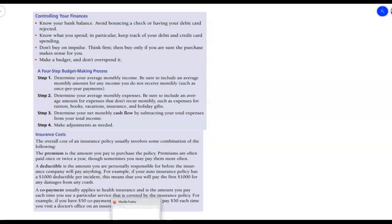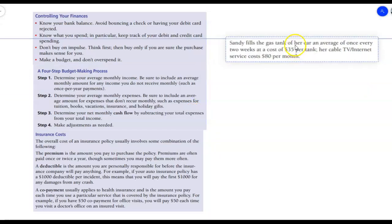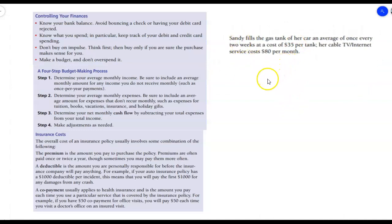All right, so let's go ahead and just take a look at a couple examples, really how we kind of convert expenses from monthly to annual, weekly, and that kind of stuff. So here I want to find out what is the monthly cost for Sandy and what is the annual cost, that means the yearly cost for Sandy. Sandy fills the tank of her car an average of once every two weeks at a cost of $35 per tank. Her TV Internet service costs $80 per month.